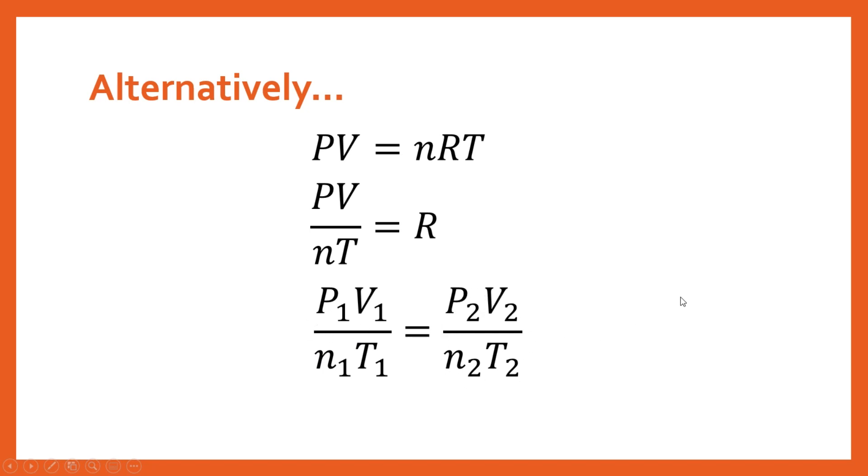So when you change something about the gas, say you moved it to a different size container, you could use this relationship to work out what some other things would be about it if you had the other pieces of information.